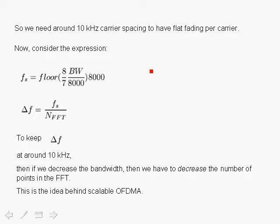We support multiple bandwidths, which we'll cover shortly. We also have the expression for the carrier spacing, which is equal to the sampling rate divided by the number of points in the FFT — by definition, this is the carrier spacing. If we want to keep ΔF constant, then as we increase the bandwidth and therefore Fs, we need to increase the number of points in the FFT. If we decrease the bandwidth, we need to decrease the number of points in the FFT.